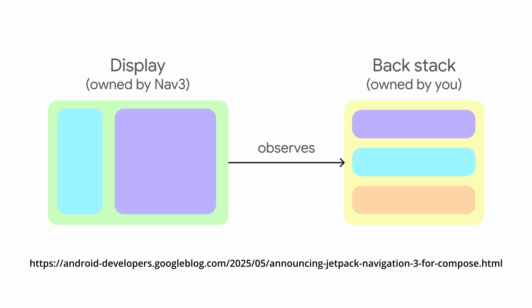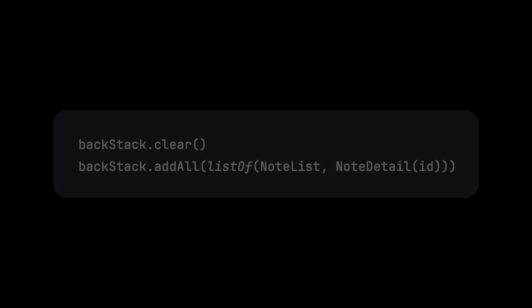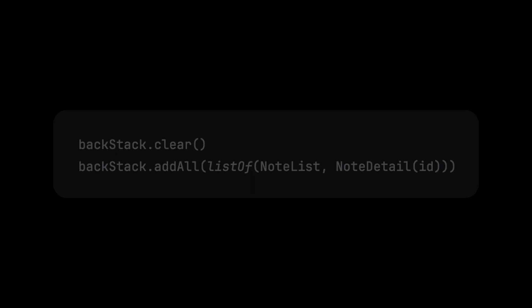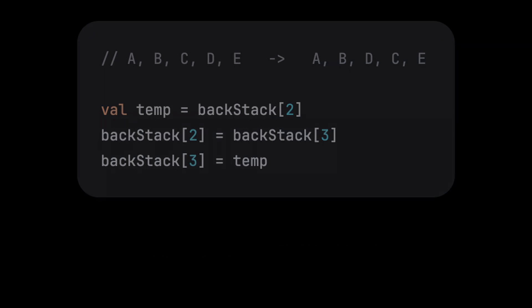The main benefit is that you now completely own the backstack. This is huge news. Instead of just reacting to navigation events, you have full control over what the navigation state is at any point. For example, you can completely replace the backstack with a new list of routes, or you could swap the order of two entries in your backstack. Having this control makes it very easy to prevent annoying things like accidental double taps navigating to the same screen twice.